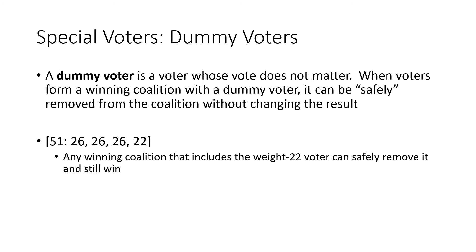Sort of the opposite of a dictator is what we call a dummy voter. A dummy is a voter whose vote does not matter — think of a mannequin at a department store. It doesn't matter if they say yes or no. Specifically, when voters form a winning coalition that includes a dummy voter, you can kick that dummy voter out of the coalition and it will still be a winning coalition. For example, consider the system [51: 26, 26, 26, 22], with voters A, B, C, and D. Even though the 22-voter (D) has 22 votes, there's no way to form a coalition including D where D couldn't just get kicked out.